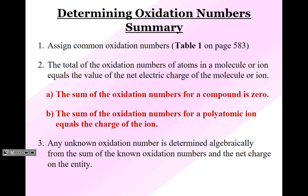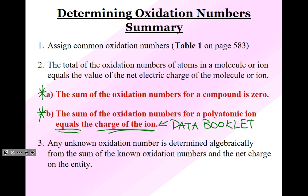Let's summarize. Assign common oxidation numbers from the table on page 583 or in this PowerPoint. The total of the oxidation numbers of atoms in a molecule or ion equals the value of the net electric charge of the molecule or ion. If it's a molecule or compound, that's always zero. If it's an ion, it's equal to the charge of the ion. The sum of the oxidation numbers for a compound is zero; for a polyatomic ion, it equals the charge of the ion — found in your data booklet. Any unknown oxidation numbers are determined algebraically from the sum of the known oxidation numbers and the net charge.